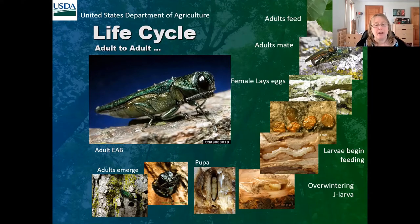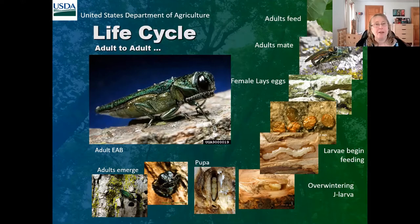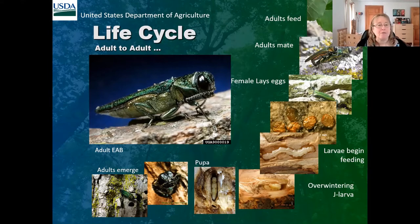In a one-year life cycle, right before winter comes on, the emerald ash borer larvae dig an overwintering chamber in the wood — they go further down in the tree and form what are called J larvae. We call them that because they're in a J shape. They spend the winter in these overwintering chambers as J larvae and pupate in the spring. There are factors that affect whether they have a one-year or a two-year life cycle.